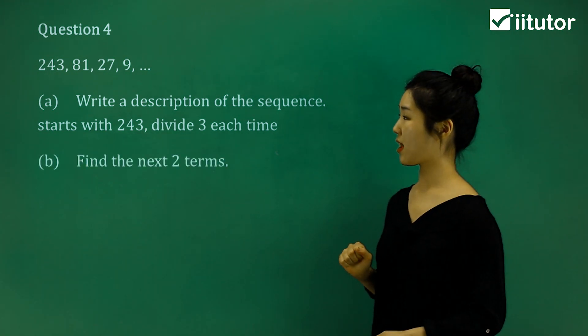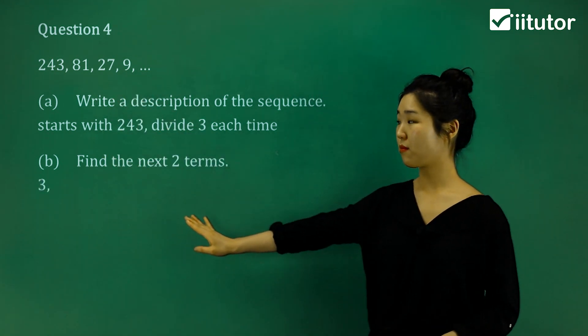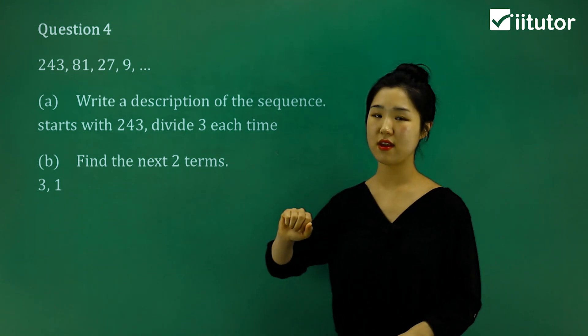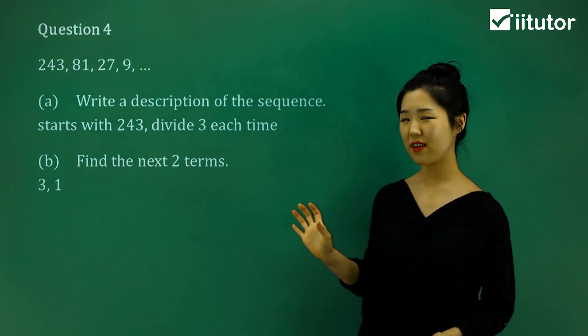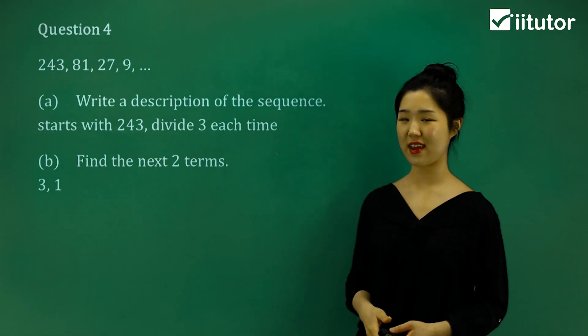So when I want to find the next two terms, what's 9 divided by 3? It's 3. 3 divided by 3? It's 1. So therefore, 3 and 1 are the next two terms. As simple as that. So I guess the key thing is to try to find the right pattern and continue it on to find any next numbers.